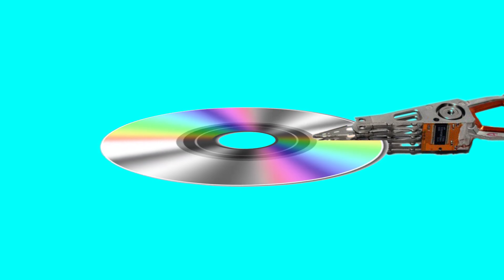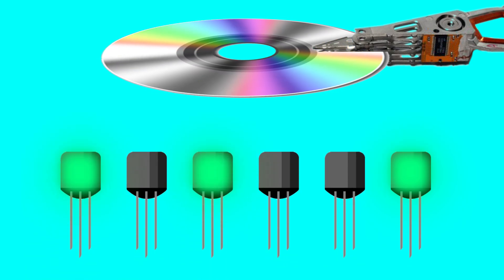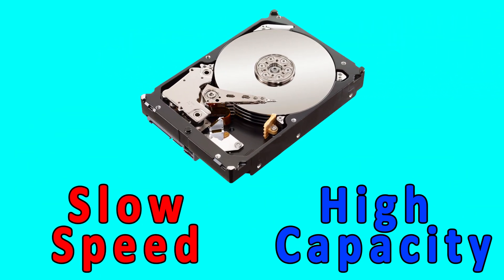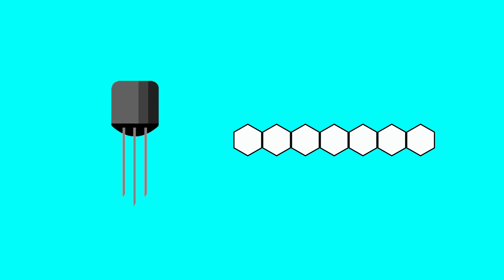So that pretty much wraps up the fundamentals of how a hard drive stores data. Now let's address the question of why. Why use something that is essentially a hyper-advanced record player when we have solid state technology? All the other binary data in your computer is stored using microtransistors — small switches that don't move and can be accessed much faster without having to wait for a spinning disk to finish a revolution. What disk drives lack in speed, they make up for in space. As small as microtransistors are, they don't compare to the magnetically charged regions on a disk drive, and while microtransistors get smaller every year, so do these magnetic regions.